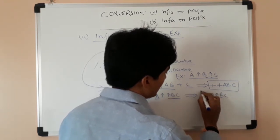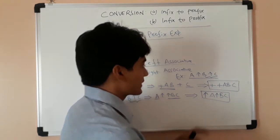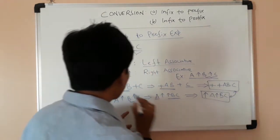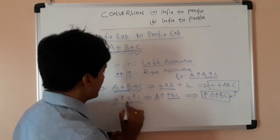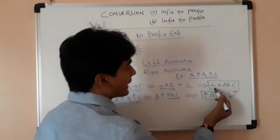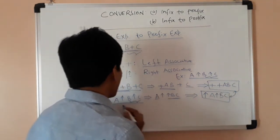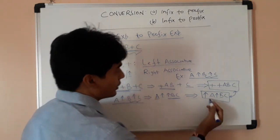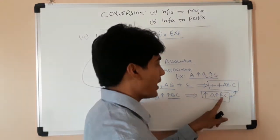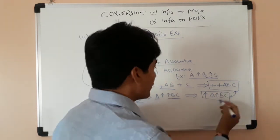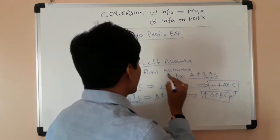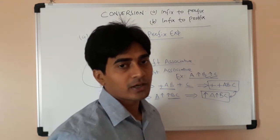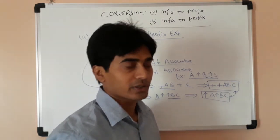Comparing these two: a plus b plus c gives prefix plus plus a b c, while a power b power c gives prefix power a power b c. The difference in structure is because of the associativity rule — plus is left associative and power is right associative.